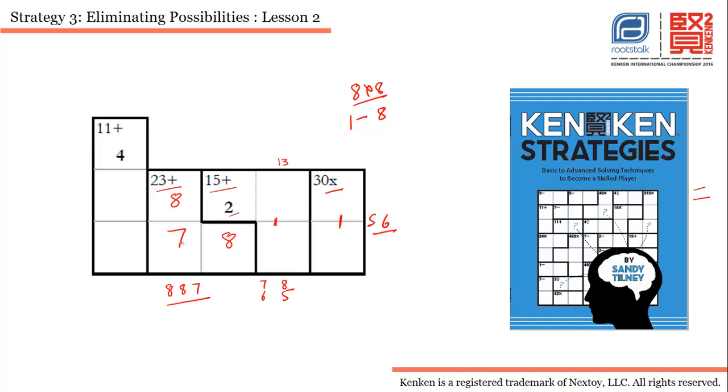Now we have this particular cage which has three cells in a column, and one cell is already filled with 4. We are left with two cells, so these two cells should add up to 7 because 4 is already there and total sum has to be 11.